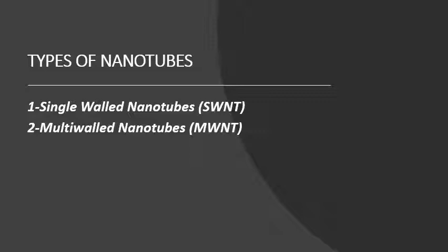Types of Nanotubes. First, SWNT, which means single-walled nanotubes. Second, MWNT, which means multi-walled nanotubes.